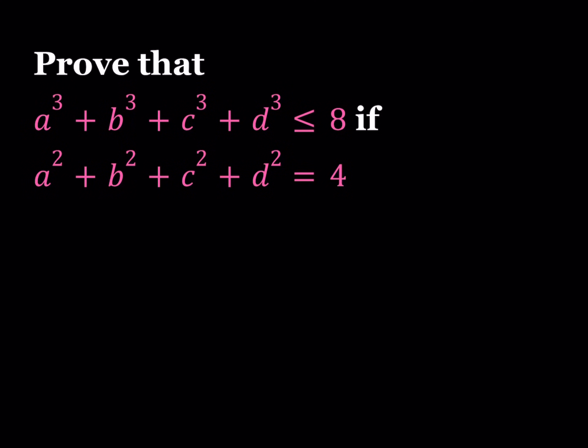Hello everyone. In this video we're going to be proving an inequality. We're supposed to prove that if a squared plus b squared plus c squared plus d squared is equal to 4, then a cubed plus b cubed plus c cubed plus d cubed is less than or equal to 8. We're going to start with the given condition that the sum of the squares of 4 real numbers is equal to 4, and show that the sum of their cubes is always less than or equal to 8.